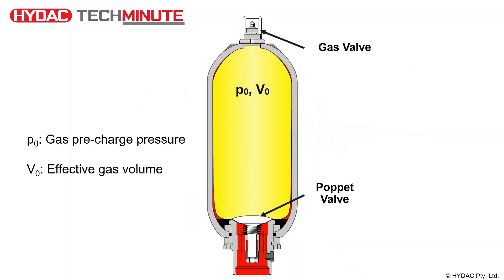Nitrogen gas is used to fill the bladder to a specified pressure through the gas valve at the top of the accumulator. This is known as the gas pre-charge pressure, or P0. The volume of gas within the accumulator is known as the effective gas volume, or V0. Note that in this configuration the bladder is holding closed the poppet on the fluid port assembly and there is no hydraulic fluid within the accumulator.